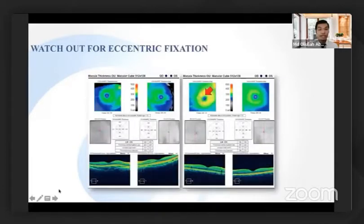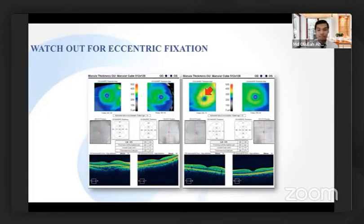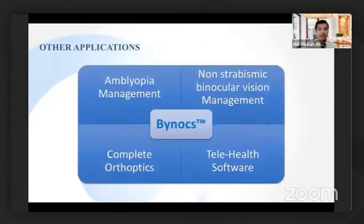We need to take care of certain parameters before enrollment into the dichoptic program. Patients with motor misalignment need to have their misalignment corrected first, with the help of prism or surgical intervention, and patients with eccentric fixation need to be counseled for a guarded prognosis.